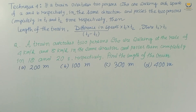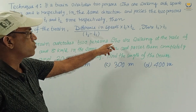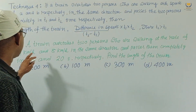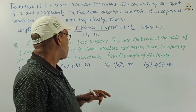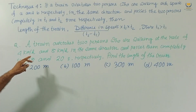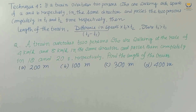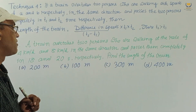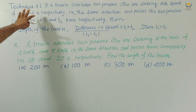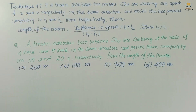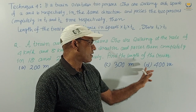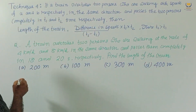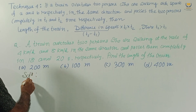Using this technique, we solve the following problem: a train overtakes two persons who are walking at the rate of 4 km/h and 8 km/h in the same direction, and passes them completely in 18 seconds and 20 seconds respectively. Find the length of the train. Options given are 200 meters, 100 meters, 300 meters, and 400 meters.